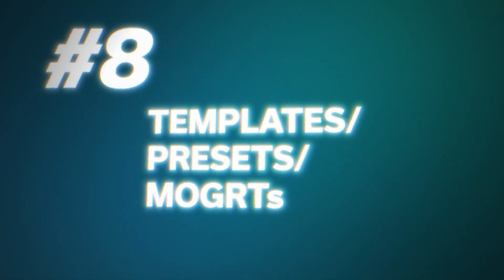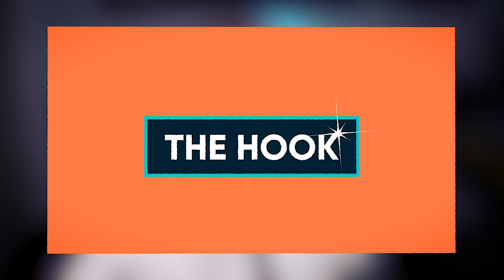Last but not least: using templates, presets, and mogerts. With templates — or mogerts as Adobe calls them — you can speed up your workflow using pre-made animations from places like Motion Array, or you can make your own. I usually make mine in After Effects, then export them and use them in Premiere. The title screens in this video were all made with mogerts, because if I had to remake them every single time that would be a pain. This way I just drag and drop it where I want to use it and change the title. I create the base animation in After Effects, export it as a mogert, and then drag and drop it into my Adobe Premiere file wherever I want the animation to be.